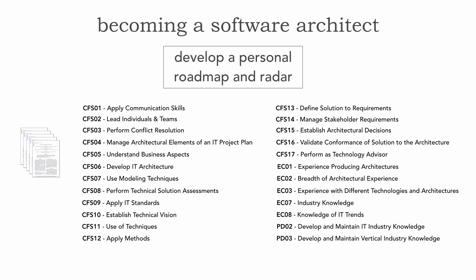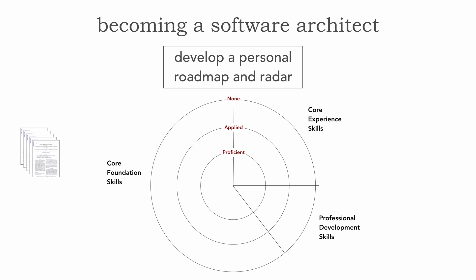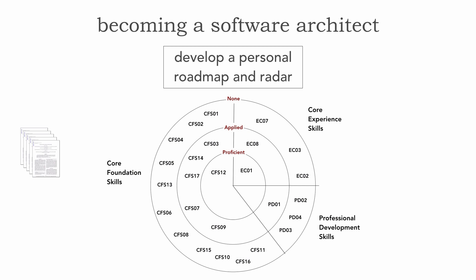The idea is to take all these categories and start documenting them to develop your own personal radar. Here's an example of one I have — you can use Keynote, PowerPoint, Visio, or whatever tool you prefer. I like to divide it into the three sections: core foundational skills, core experience skills, and professional development. The certification packet has four different levels of proficiency — you can create four concentric circles — but here I'm just showing three: none, applied, and proficient. You take all 17 core foundational skills, the five experience skills, and the professional development skills, and chart those on your radar.